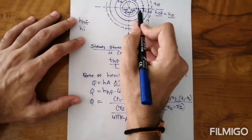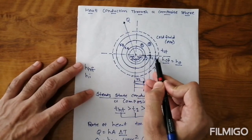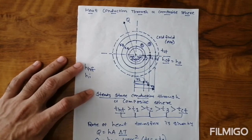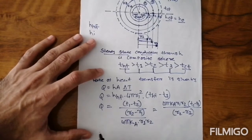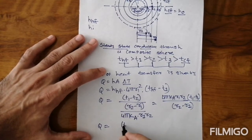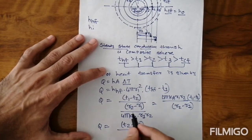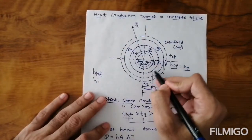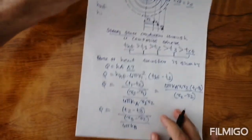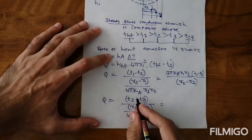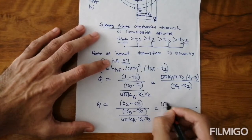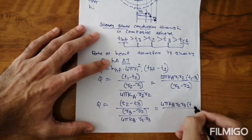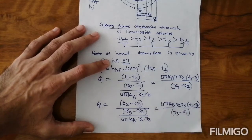For heat transfer from T2 to T3 — solid to solid again — the same conduction equation is used but with layer B parameters: Q = 4πKB × R2 × R3 × (T2 − T3) / (R3 − R2).